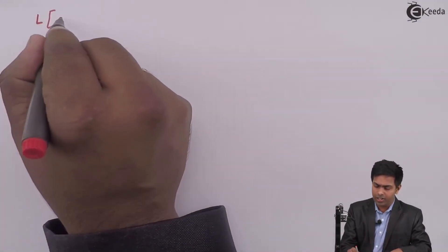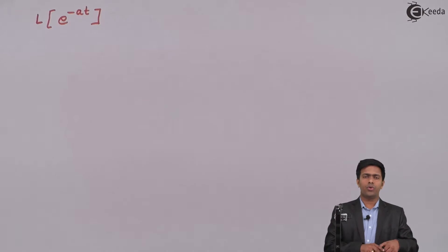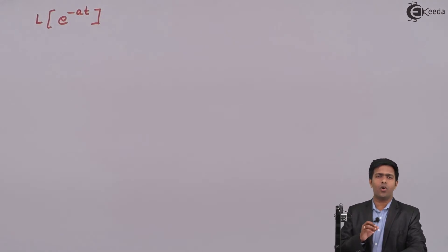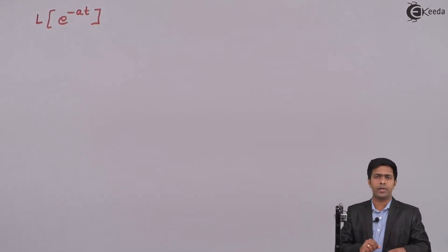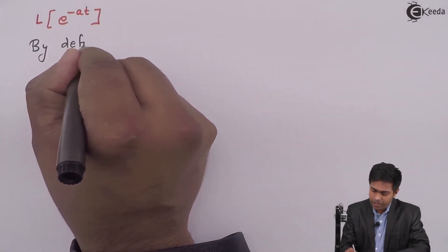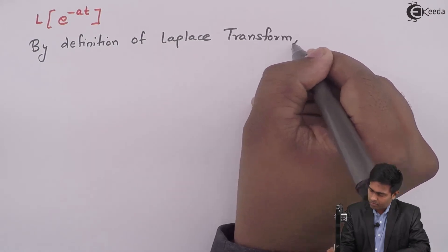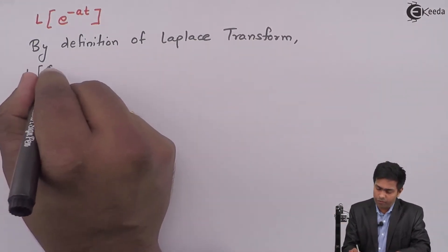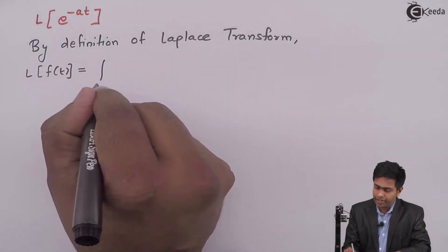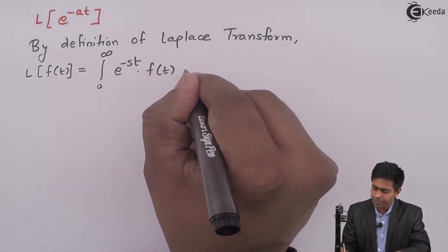We need to find out the value of the Laplace transform of e raised to minus at. To derive this formula, we are going to use the definition of Laplace transform. By the definition of Laplace transform, we have the Laplace of function of t is equal to integration from 0 to infinity of e raised to minus st into function of t, with respect to t.